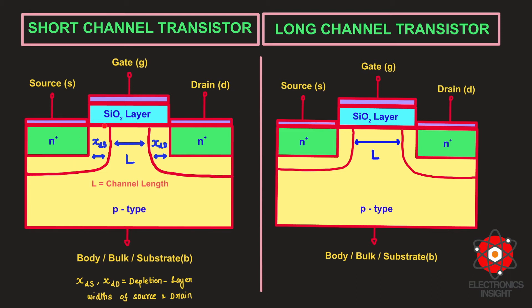The drain and source regions come very close to each other, the channel region is smaller, and it is easier for electrons to get into the channel and invert the channel surface. The field lines that penetrate from the drain into the channel affect the source end of the channel because the source is very close. This reduction of the potential barrier with increase in drain bias is called the drain induced barrier lowering effect.